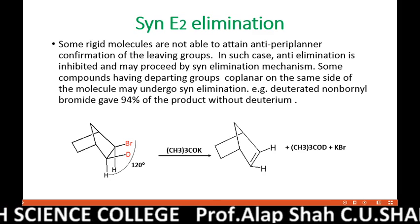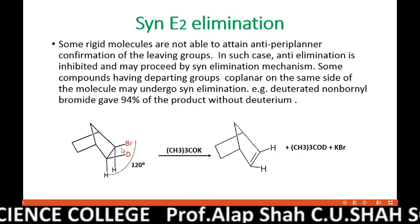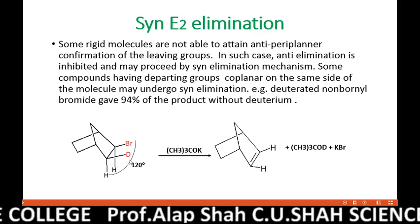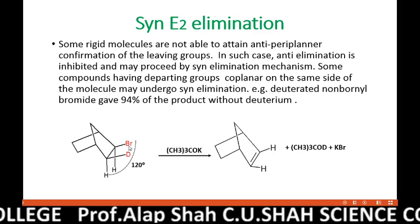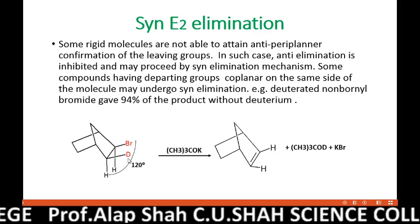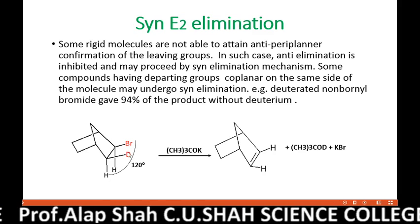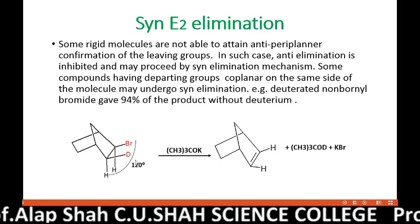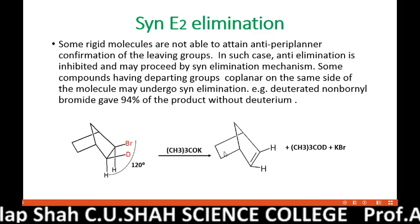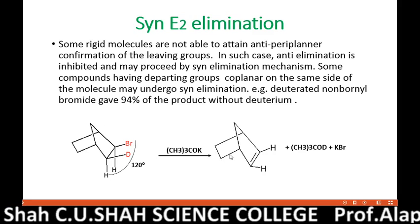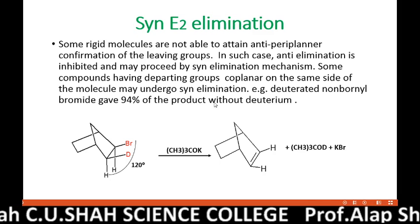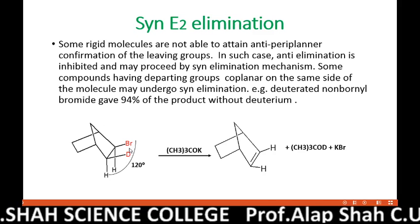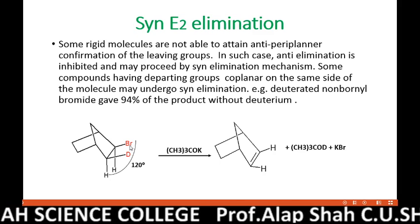In such a case, where anti-elimination is not possible, only syn elimination takes place. In syn elimination, bromine and deuterium from its neighboring beta carbon get eliminated. They are coplanar and parallel — their mutual bond angle is zero — and they undergo syn elimination. As a result, the major product (94%) does not contain deuterium, which is proof that this reaction follows syn elimination, because deuterium and bromine from the same side get eliminated.